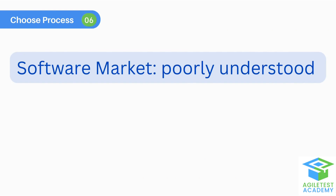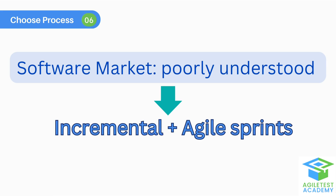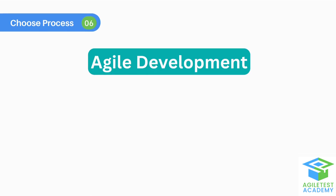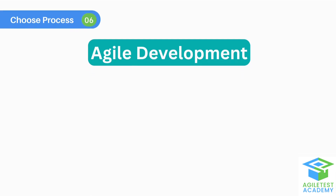If the market for the software is poorly understood, use incremental and agile sprints to get operational software in front of the customer as soon as possible. Going through all these software development processes, we see that each process has its pros and cons, and it is up to the users and your team members to decide which one to use. But we choose the agile approach because it adapts quickly to changing requirements and customer needs.